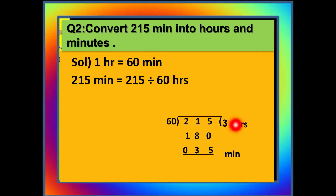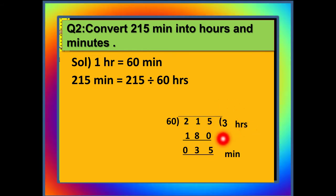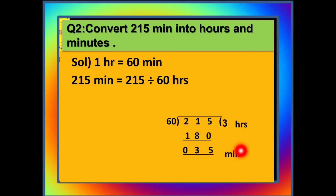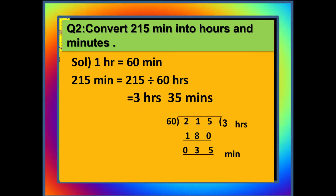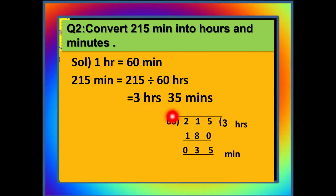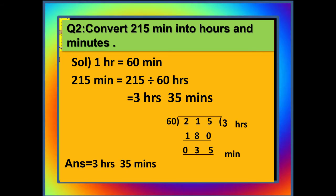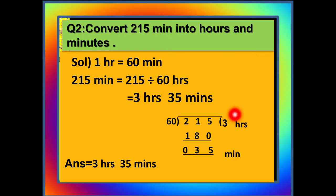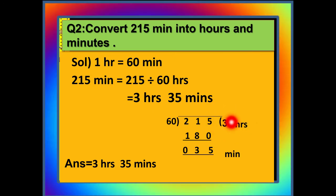The bigger unit is represented by the quotient, which is hours, and the smaller unit is represented by the remainder, which is minutes. So 215 minutes has 3 hours and 35 minutes in it. Children, keep this point in mind: whenever you are dividing, the bigger unit is always represented by the quotient and the smaller unit is the remainder.